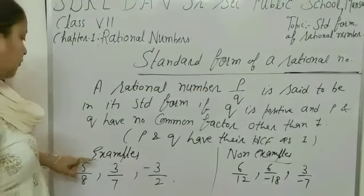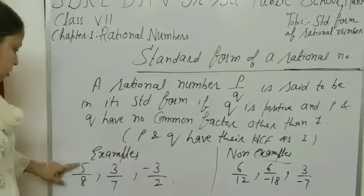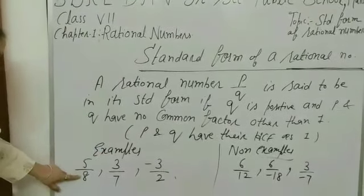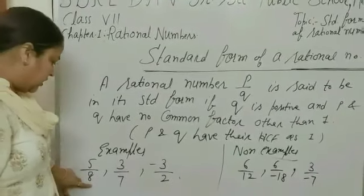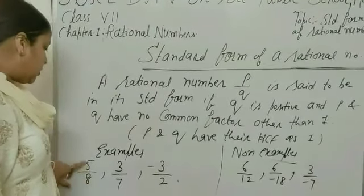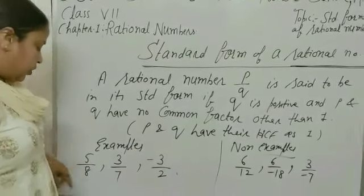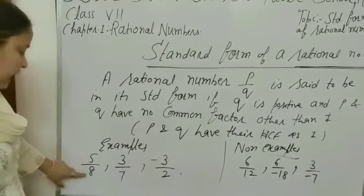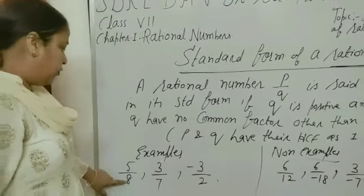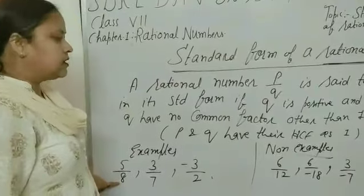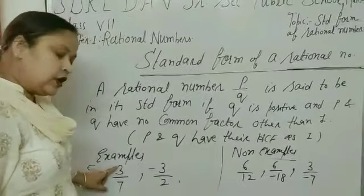Examples of a Rational Number which is in Standard Form. So, 5 upon 8 — here the denominator is 8, which is positive. Also, 5 and 8 have the common factor 1 only. Therefore, 5 upon 8 is a Rational Number which is in Standard Form.